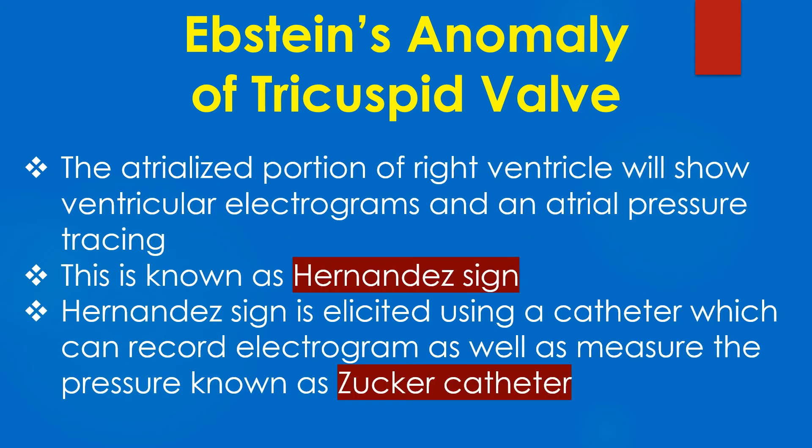The atrialized portion of the right ventricle will show ventricular electrograms and an atrial pressure tracing. This is known as the Hernandez sign, which is elicited using a catheter that can record electrograms as well as measure pressure, known as the Succar catheter.